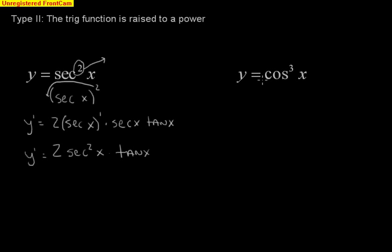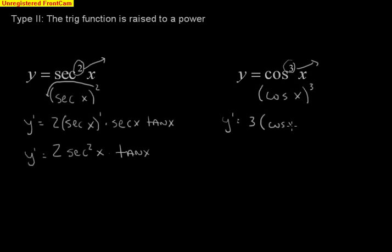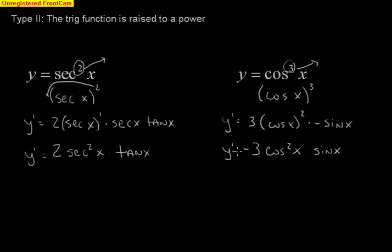Here's another one: cosine cubed. I'm going to pull out the cube and write it with parentheses — cosine of x, quantity cubed. By power rule, 3 comes down, giving cosine of x squared, times the derivative of the inside. The derivative of cosine is negative sine. Putting this all together, I wind up with negative 3 cosine squared of x times sine x. So there's your derivative for that one. That's type 2, where the trig function is raised to a power.